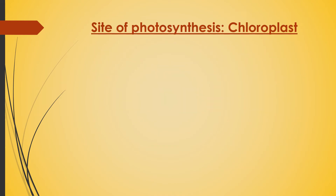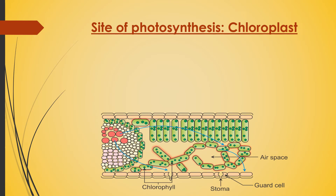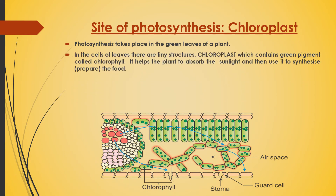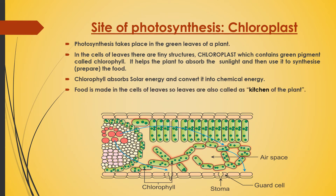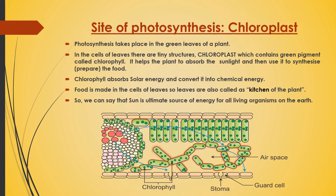The site or location of photosynthesis is the chloroplast. Look at the figure carefully — it is a vertical section of a leaf where green colored dots show chlorophyll. Photosynthesis takes place in the green leaves of a plant. In the cells of the leaves there are tiny structures called chloroplasts, which contain a green pigment called chlorophyll. This chlorophyll helps the plant absorb sunlight and use it to synthesize food. Chlorophyll absorbs solar energy and converts it into chemical energy. Food is made in the cells of the leaves, so leaves are also called the kitchen of the plant. The sun is the ultimate source of energy for all living organisms on earth.